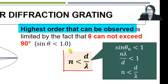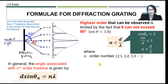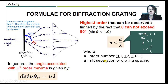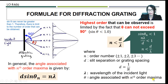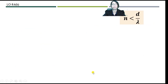This equation, n < d/λ, allows us to determine the highest order observable for a given diffraction grating. Here, n is the order number starting from 1, 2, 3...; d is the slit separation or grating spacing calculated using d = 1/N where N is the number of slits per unit length; λ is the wavelength of the incident light; and θ is the angle associated with the nth order maximum.